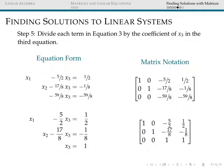Now we're in the home stretch. For our third equation, both sides have coefficient negative 59 eighths in front of x3. Our goal is to make the coefficient in front of x3 equal to 1, so we multiply both sides by negative 8 fifty-ninths, giving us the equation x3 equals 1, corresponding to the row 0, 0, 1, 1. We already know that our solution to the system of linear equations must have the third unknown equal to 1.